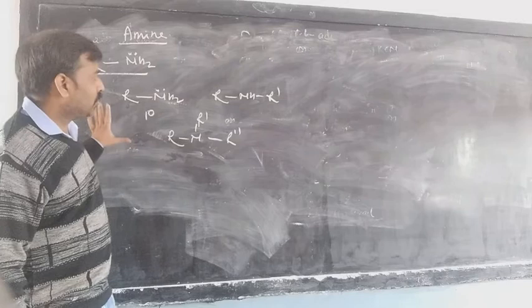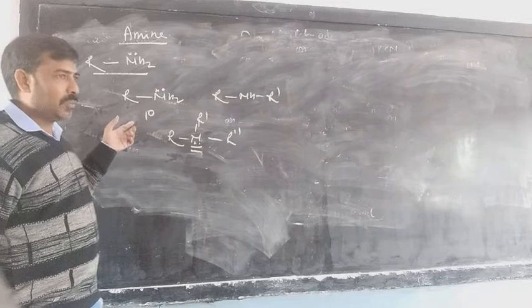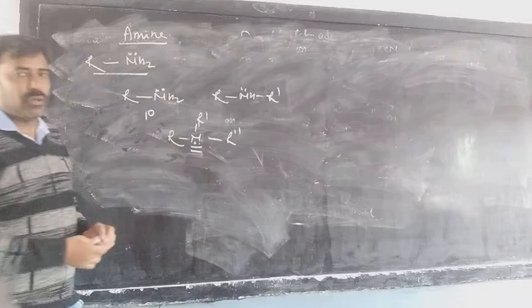Each of the amines has an NH2 group or a substituted NH2 with a lone pair of electrons, and because of this, the system is quite reactive by nature. Each of the lone pairs of electrons takes part in the reaction. So the amines are very much reactive, having a lone pair of electrons on the nitrogen.